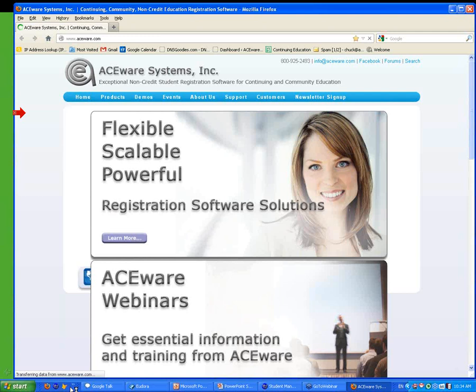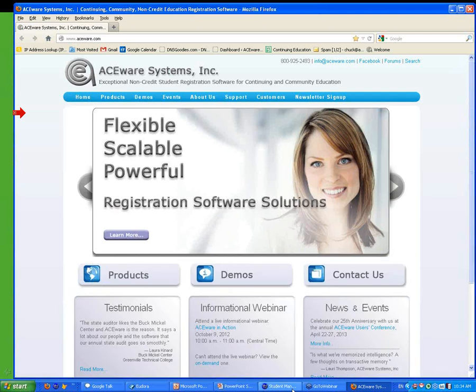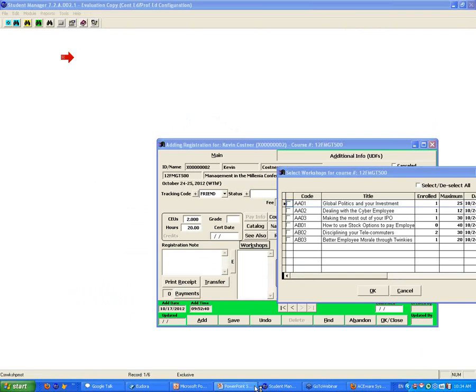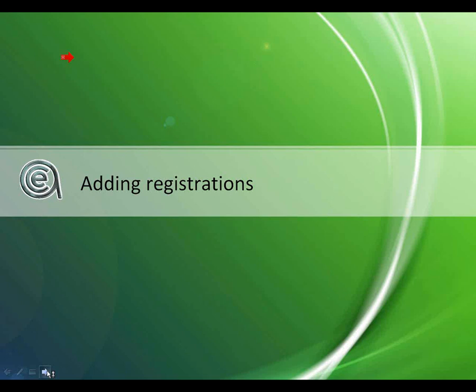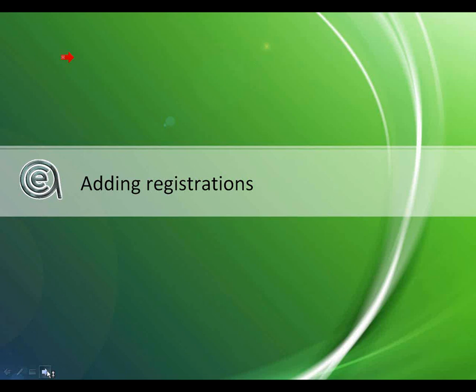Let's jump into adding registrations. We have a poll for you. There are multiple ways, as with most screens in Student Manager, to get somewhere: looking up a name and then clicking Add Registration; looking up a course and then doing Add Registration; or using the green binoculars, primarily used when you have existing names in the system, and then hitting the Add button on the registration screen.